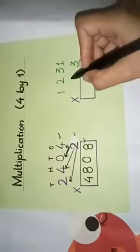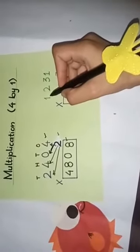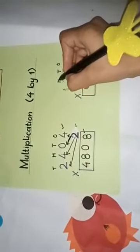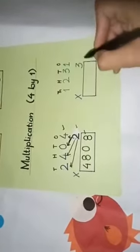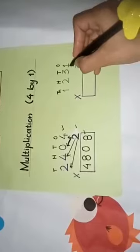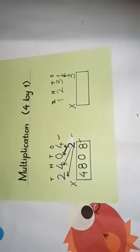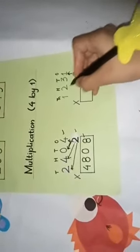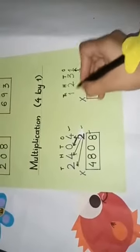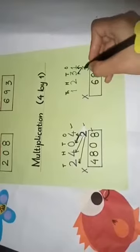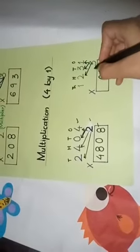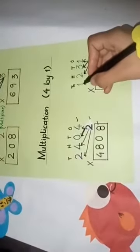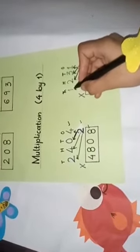Now there is also a 4-digit number: 1,231. So we have 1s, 10s, 100s, and 1000s. 3 will be multiplied firstly with 1 — 3 ko sab se pahle 1 ke saath multiply karenge — 3 ones are 3. And 3 threes are 9. 3 twos are 6. And 3 ones are 3 — same answer because the number is multiplied with 1. So the answer is 3,693.